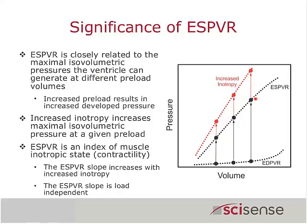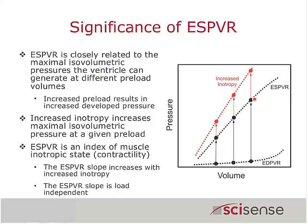Now in our experiment, if we take that heart and perfuse it with a beta agonist — isoproterenol or dobutamine — to increase the inotropy of that heart, then at any given preload volume we will get an enhanced increase in pressure development. The maximal developed pressure is enhanced by the application of a positive inotropic agent. We see that the end-systolic pressure-volume relationship — which in this model is the isovolumetric pressure being developed — is enhanced and the slope is increased, very similar to what we see with the ESPVR generated during IVC occlusions in the beating heart.